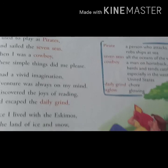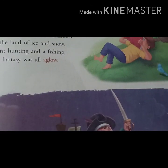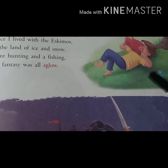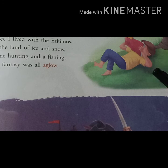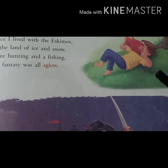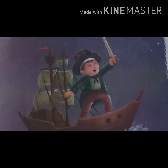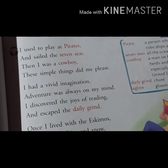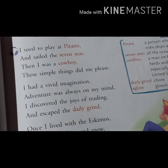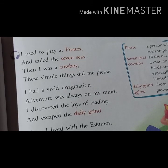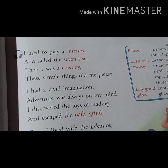Now let's start the chapter. You can see a beautiful picture of a boy reading a book. During this time he starts to imagine. The first picture is a picture of a pirate. Now let's start the poem: 'I used to play at pirates and I sailed the seven seas, then I was a cowboy, these simple things did me please.'